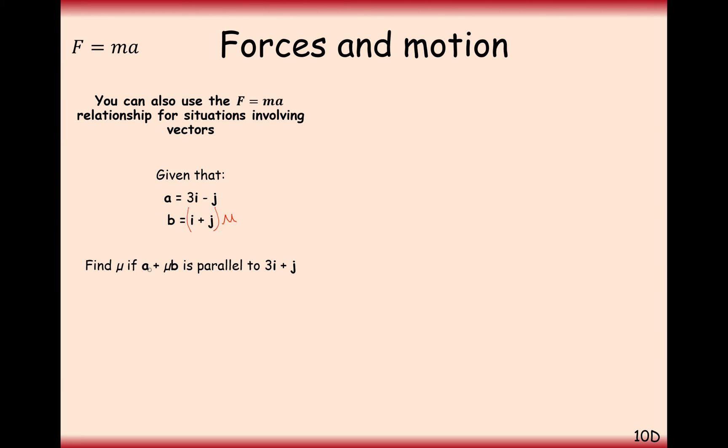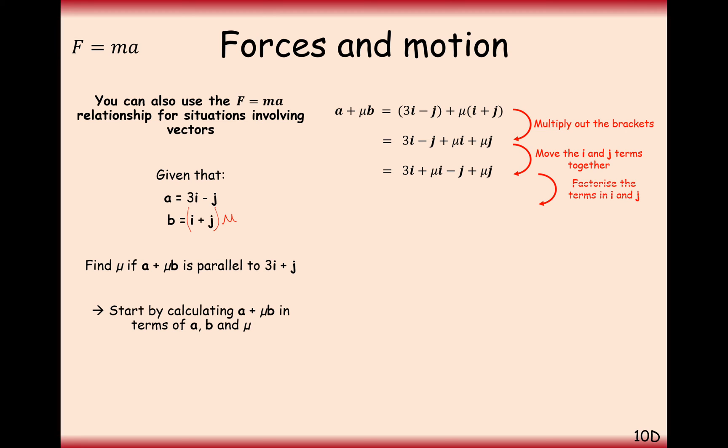So let's start off by adding these two vectors together, but timesing b by the value mu. So a plus mu b, multiply them out, group your i's and j's together, and then factorize out the i from the i parts and the j from the j parts. So I've grouped my i's together here and j's together here, and then factorize them out, i's first and then j's second.